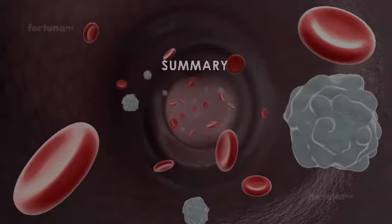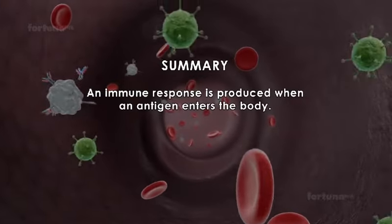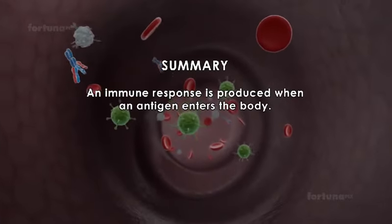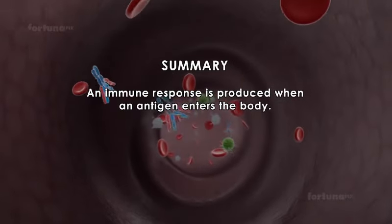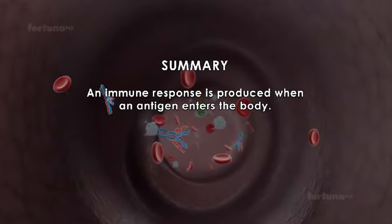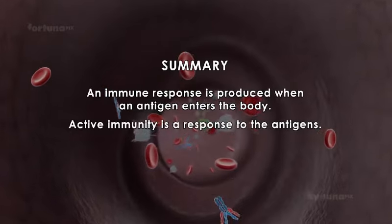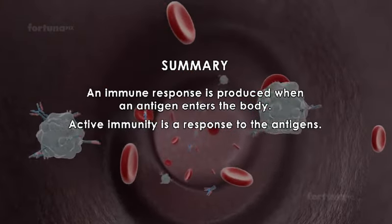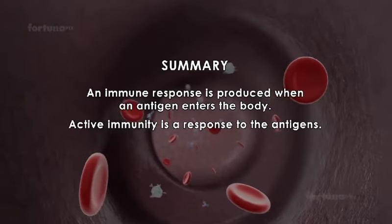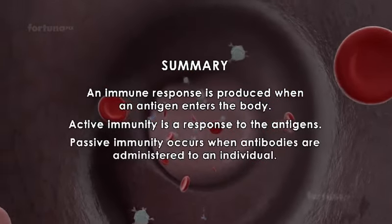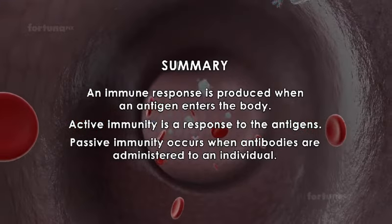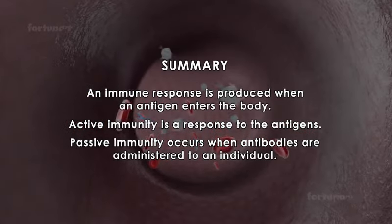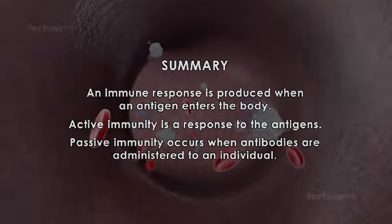Summary: An immune response is produced when an antigen enters the body. Active immunity is a response to the antigens. Passive immunity occurs when antibodies are administered to an individual.